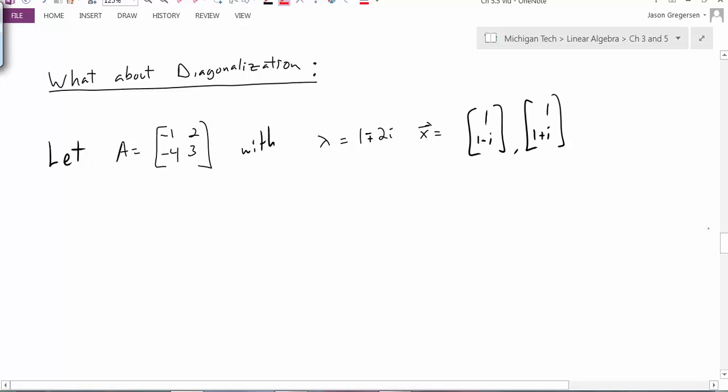So if we consider this example, we're given some matrix A, and we've already found the eigenvalues and the eigenvectors, and they look like this. We have complex eigenvalues and then the associated complex eigenvectors.